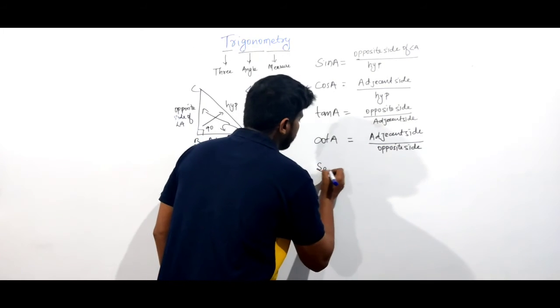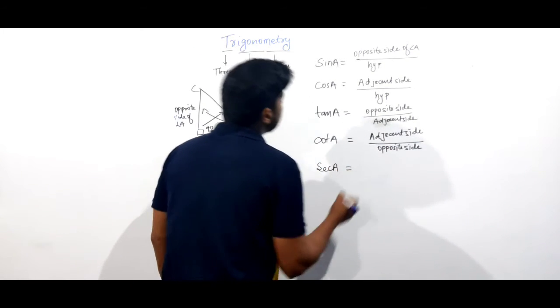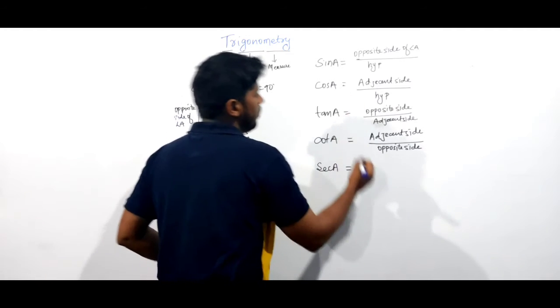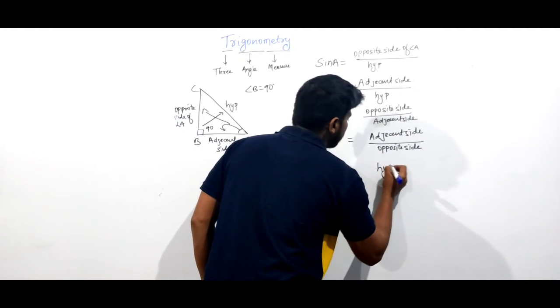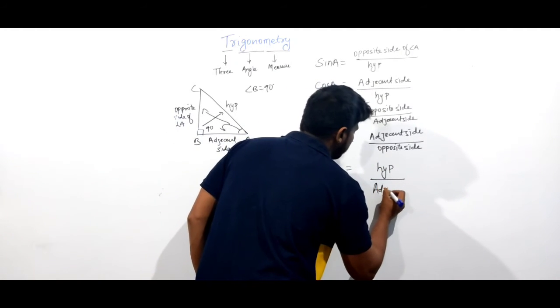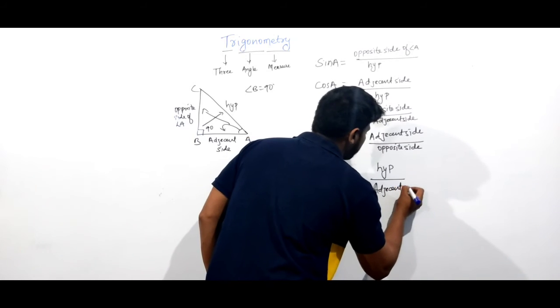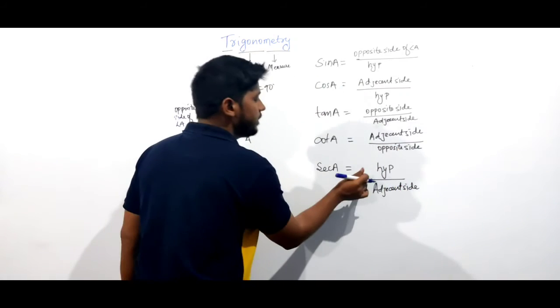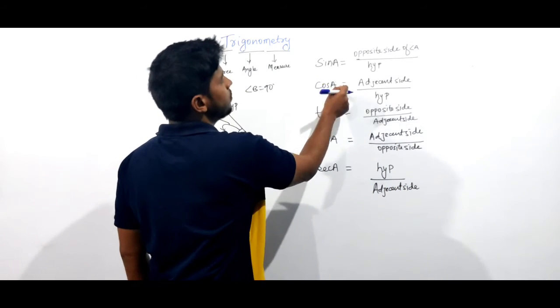And sec A—sec A is equal to hypotenuse by adjacent side. It is just the reciprocal of cos A.